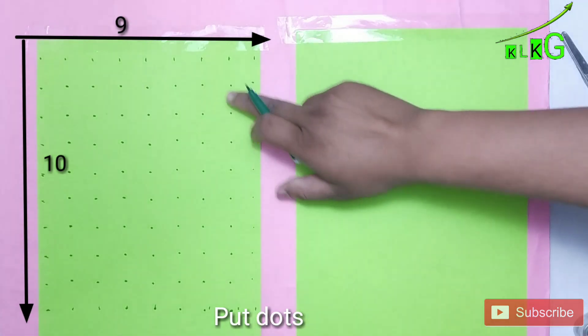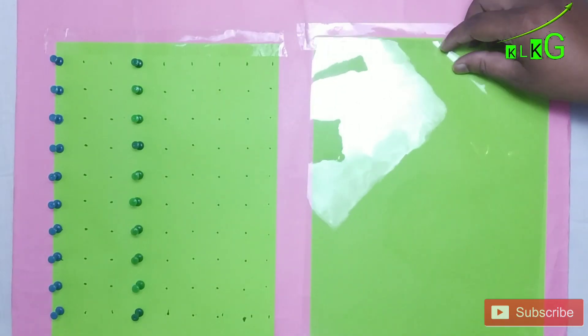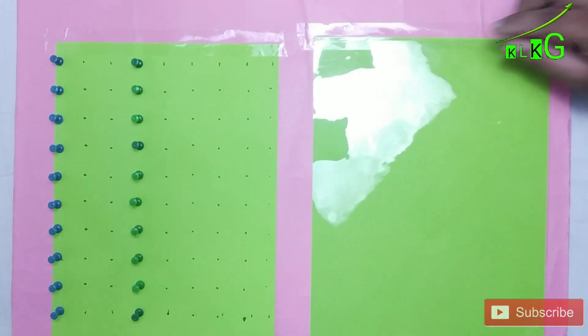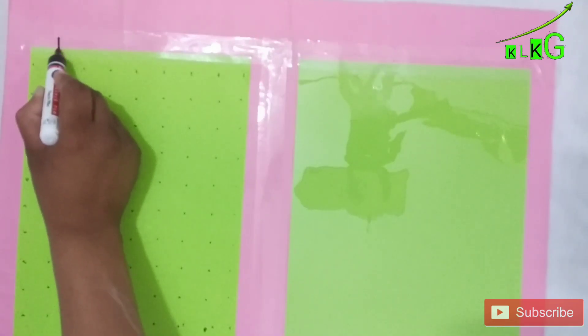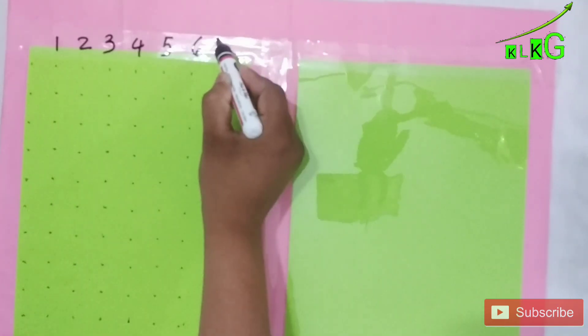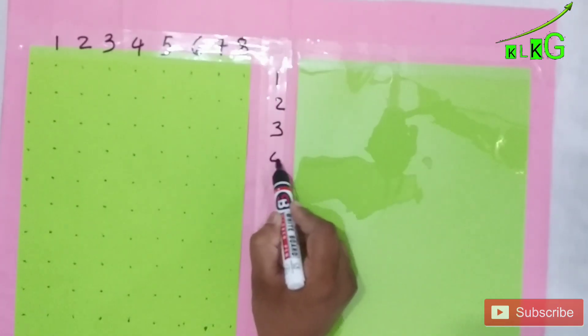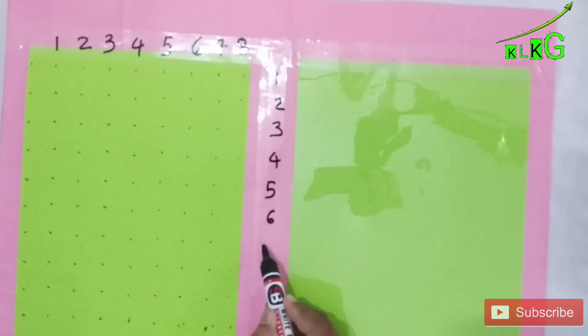So horizontal 9 and vertically 10 dots I have already kept, and on the right side I'm going to put a plastic sheet and I'll paste it with cello tape. Then we are going to write numbers as you can see here.